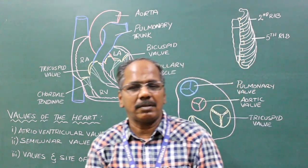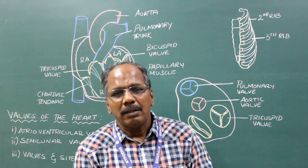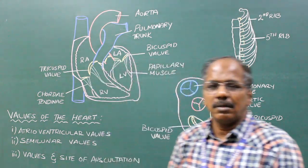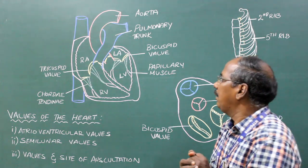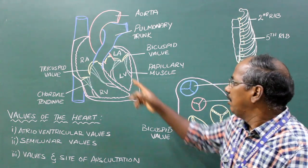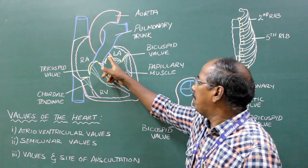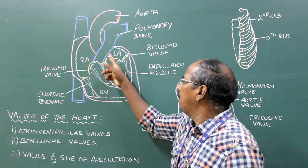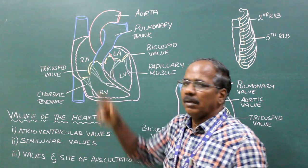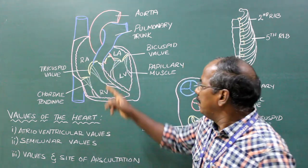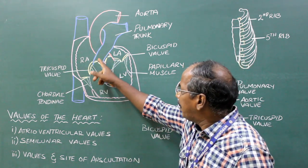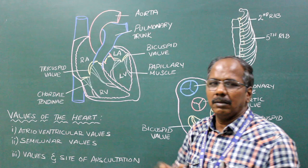Semilunar valves. There are two semilunar valves. Number one, the aortic valve, present in the aorta. Number two, the pulmonary valve, present in the pulmonary trunk.